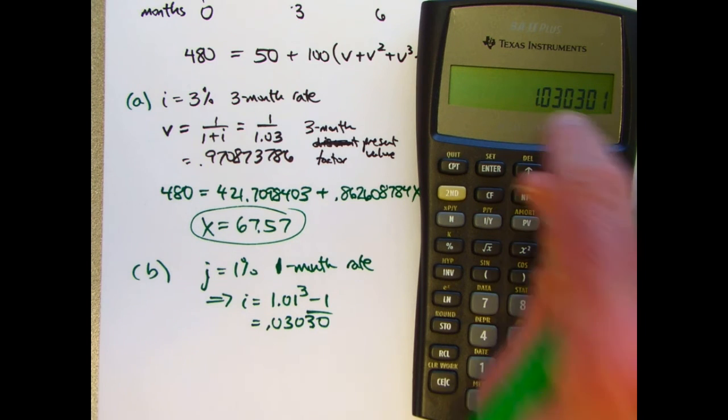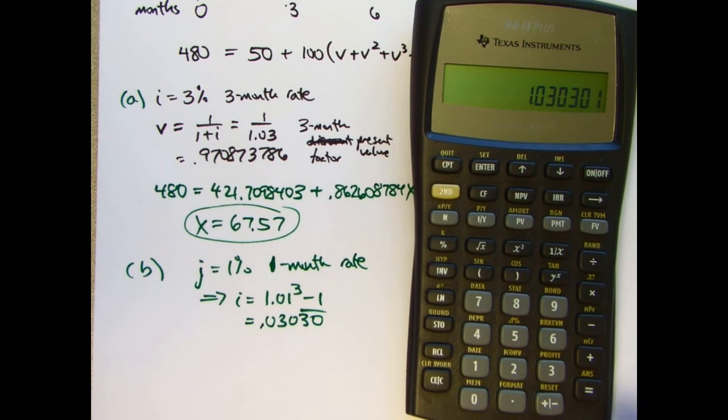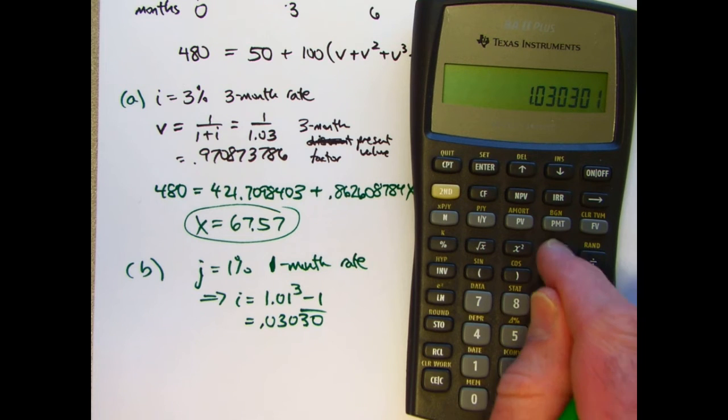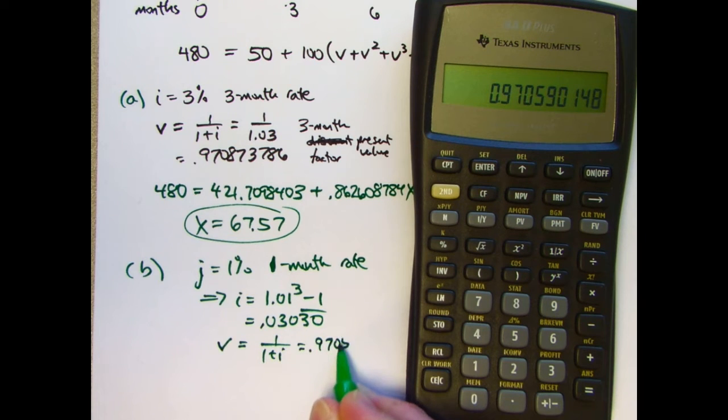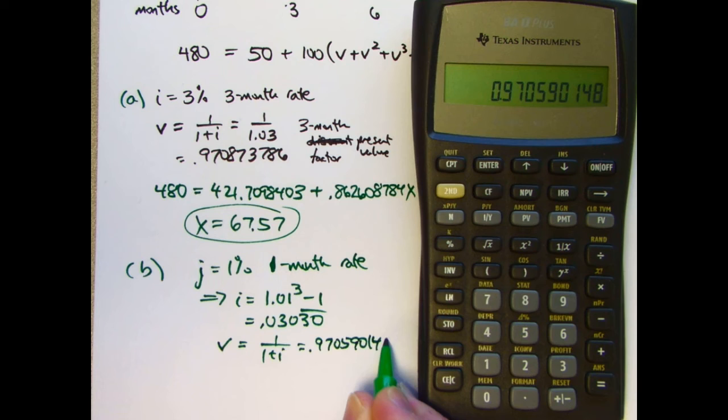And, well, what the number that's already in there is 1 plus i, so I can take its reciprocal to find V. V, in this case, 1 over 1 plus i is 0.970590148.